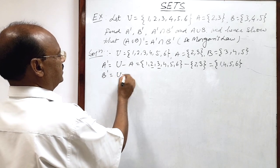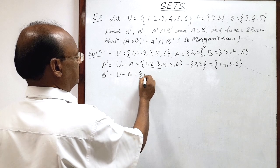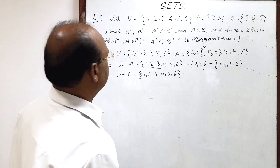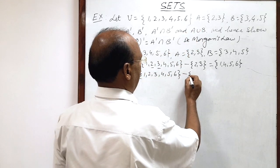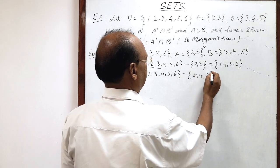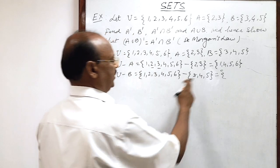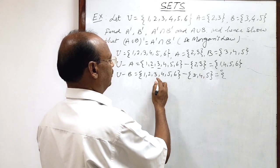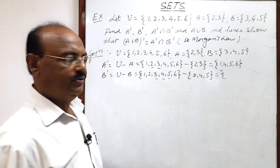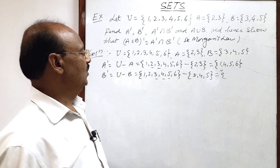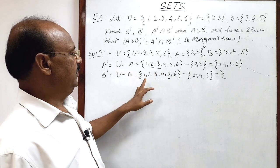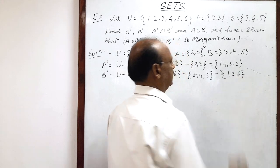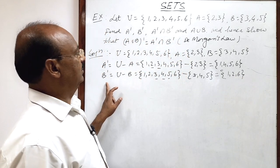Similarly, B complement is universal set minus set B. The universal set is {1, 2, 3, 4, 5, 6} and set B has elements {3, 4, 5}. The common elements 3, 4, and 5 are removed. The remaining elements give us B complement as {1, 2, 6}.